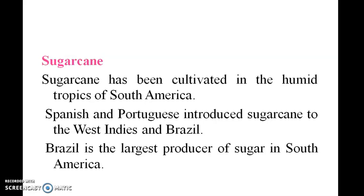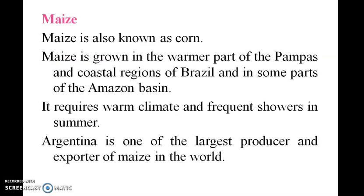Sugar cane is also very famous, as in North America. Spain and Portugal introduced sugar cane to the West Indies and Brazil. Maize, also known as corn, is grown in the warmer parts of the Pampas and the coastal regions of Brazil.